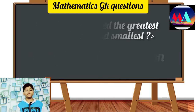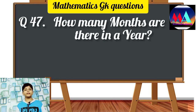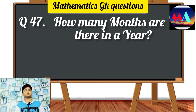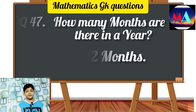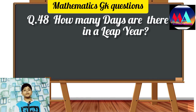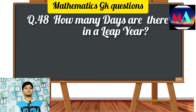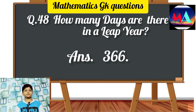Question number 47: How many months are there in a year? Answer: 12. Question number 48: How many days are there in a leap year? Answer: 366.